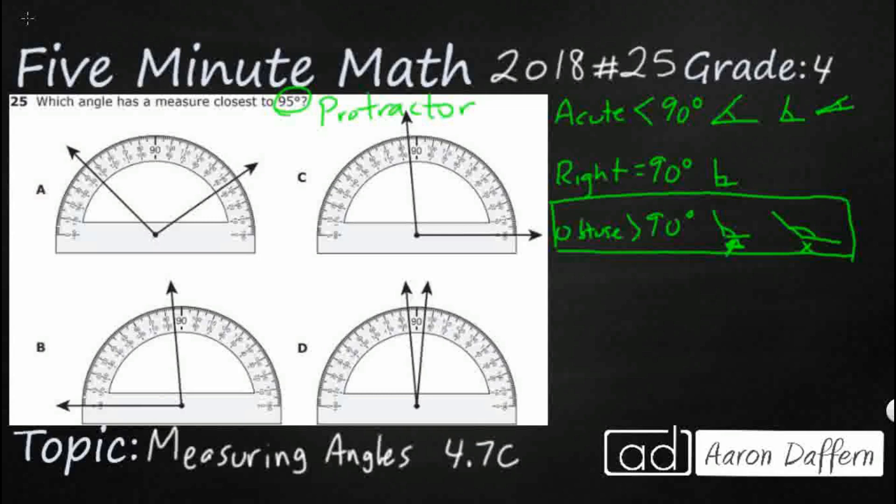Eyeballing the choices, take a look at D — D just looks ridiculous. D is an acute angle, so we know that's not going to be it. Let's start by eliminating that one.